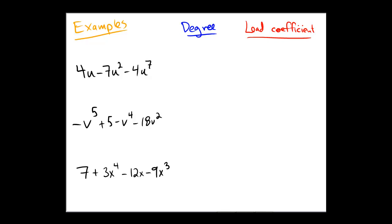So here in the first example we have 4u to the power of one minus 7u to the power of two minus 4u to the power of seven. So the exponents are the hidden one, the number two, and the number seven. Among these, the largest would be the number seven.